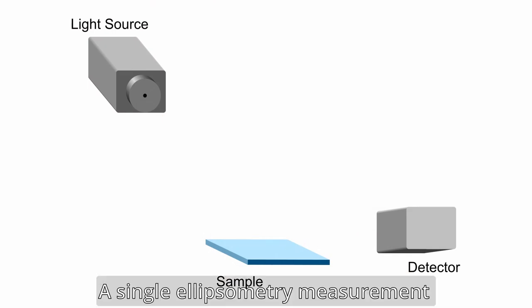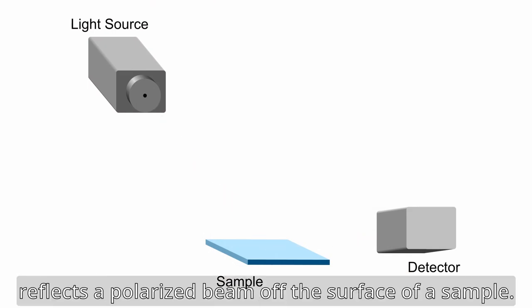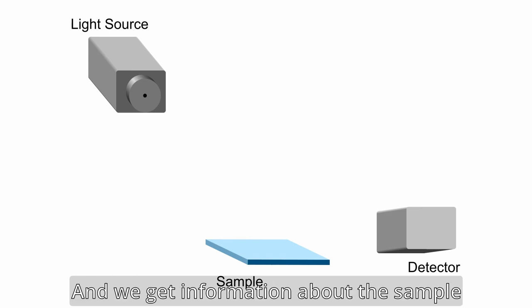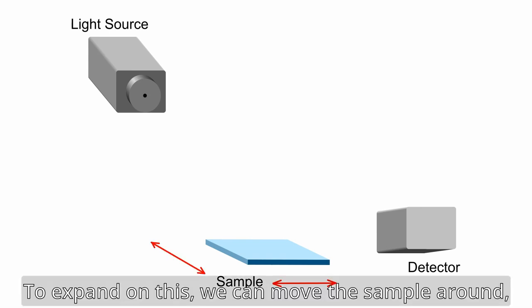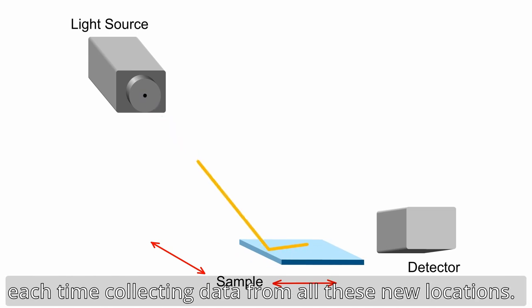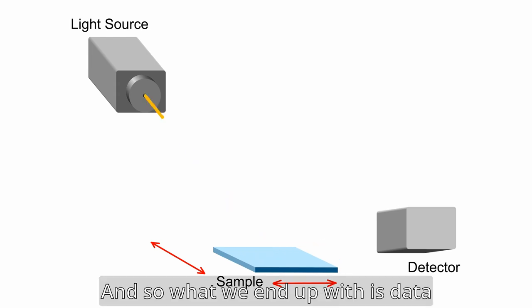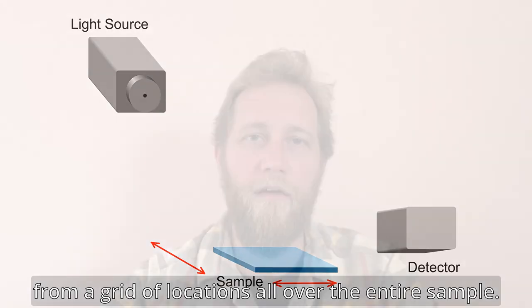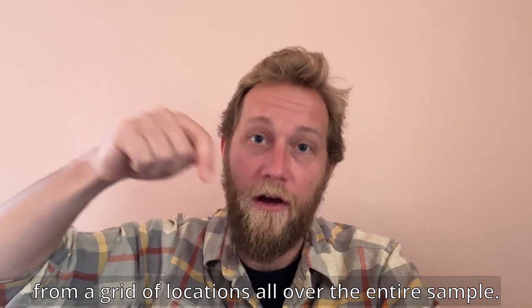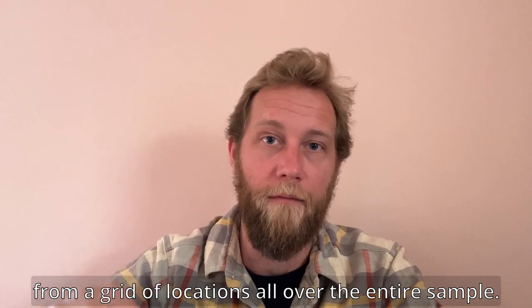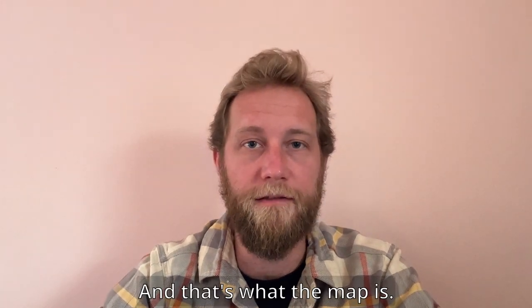A single ellipsometry measurement reflects a polarized beam off the surface of a sample, and we get information about the sample from where the beam hit it. To expand on this, we can move the sample around, each time collecting data from all these new locations. What we end up with is data from a grid of locations all over the entire sample — and that's what the map is.